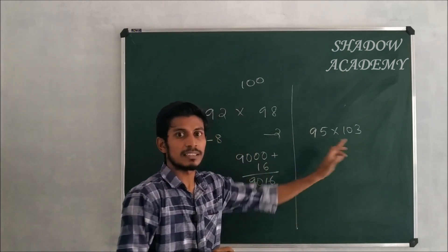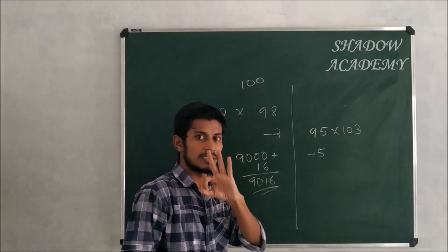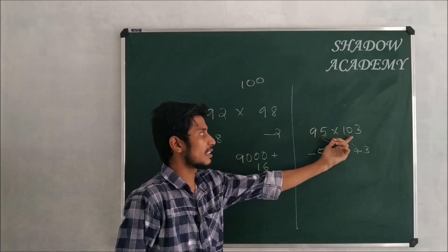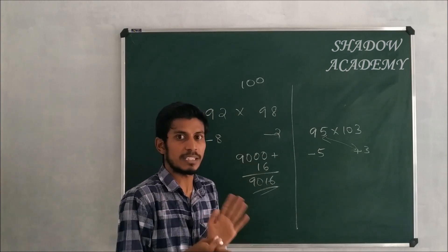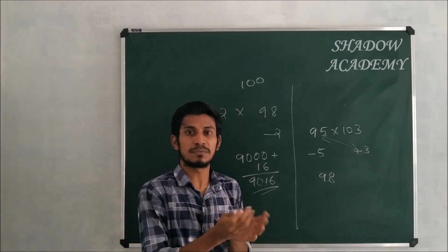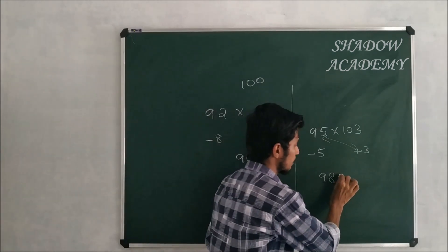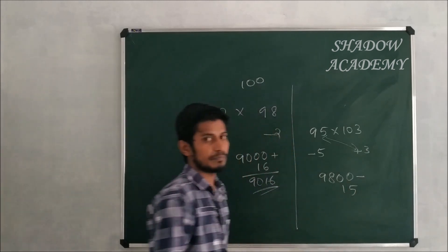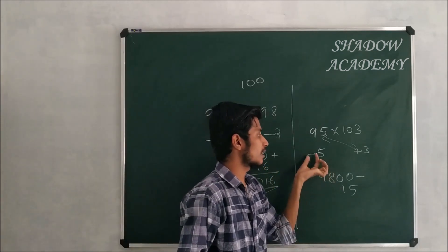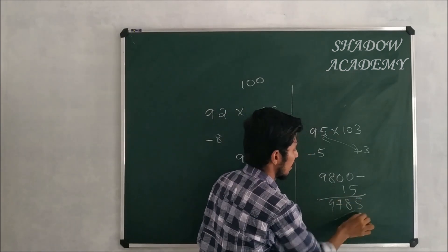95 is minus 5 from 100, and 103 is plus 3. So 95 + 3 = 98 and 103 + (minus 5) = 98. Then minus 5 × plus 3 = minus 15. Negative × positive = negative. The answer is 9785.